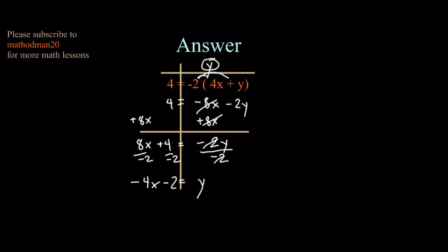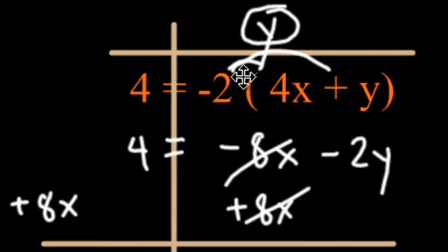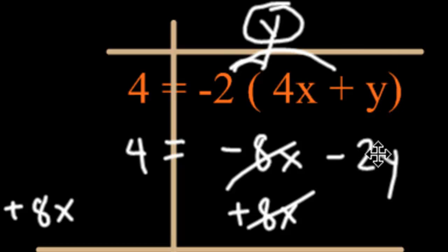Here is the answer from the previous slide. Y equals negative 4x minus 2. The first step that I did was distribute. Negative 2 times 4x is negative 8x. Negative 2 times y is negative 2y. The second step is to get rid of the 8x by adding 8x to both sides.